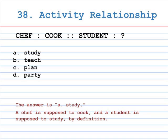Number 38: activity relationship. A chef is to cook, as student is to A. Study, B. Teach, C. Plan, D. Party. The correct answer is A, Study. A chef is supposed to cook, and a student is supposed to study, by definition.